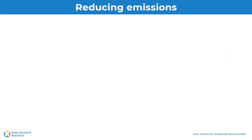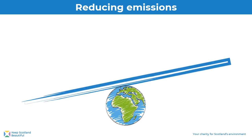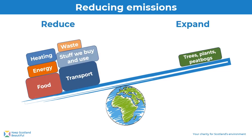Once you understand climate change it's time to think about what we can do to reduce emissions. We want to aim to balance the scales so that the amount of greenhouse gases we are emitting is equal to the amount that is being absorbed, for example by plants. In terms of EcoSchools this means that we can work on reducing emissions from heating, energy, food, waste, the stuff we buy and use, and transport.